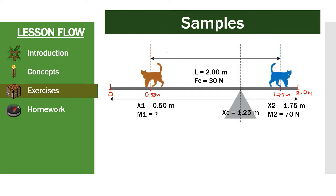You would typically solve for the moments of both cats, but there's one thing you have to account for: when the pivot point is not at the exact center of the seesaw — not at the center of mass — you also have to account for the seesaw's own mass. Because it has its own mass, it will also exert a moment. The weight of the seesaw is 30 newtons.